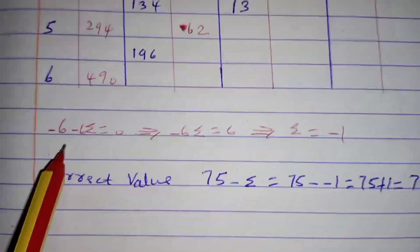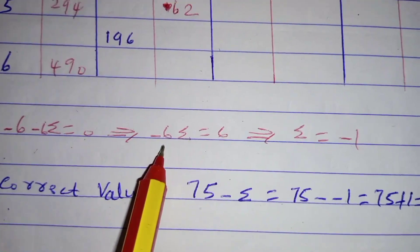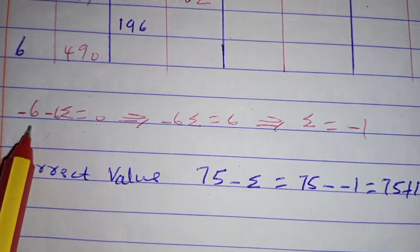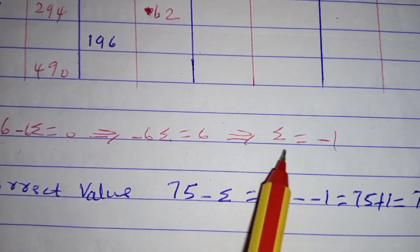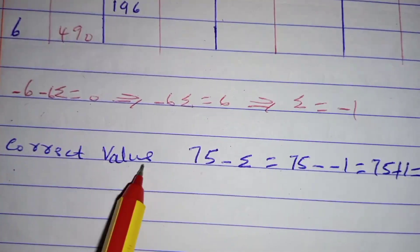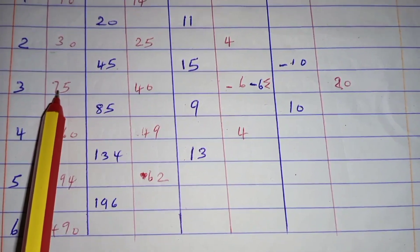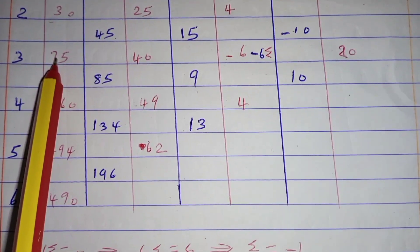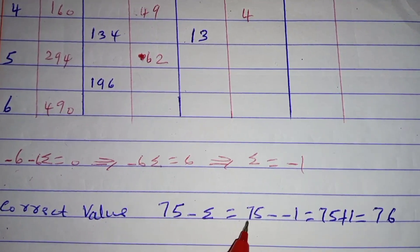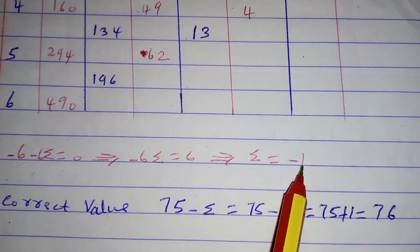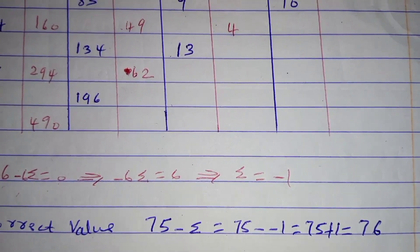We use this to obtain the error. We have: negative 6 minus 6 times error equals 0, meaning negative 6 times error equals 6. Dividing both sides by negative 6, we obtain error equals negative 1. So the correct value — looking at this table, our error occurred when the entry 75 was being recorded. The correct value will be 75 minus error, which equals 75 minus (negative 1), which equals 75 plus 1, which equals 76.